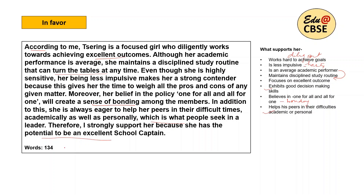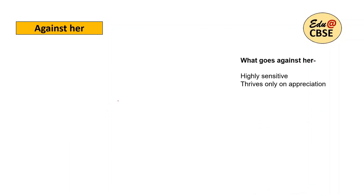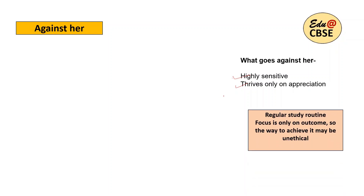The word count is 134 — that's fine. Now let's move on to the next one: the paragraph against her candidature. There were two points against her — highly sensitive and thrives only on appreciation — but I'm going to use a few other points too. I'm taking points from the strengths column and converting them into weaknesses, because sometimes what looks like a strength may not actually be a strength. I'll use: a regular study routine — we'll see how to show it as a weakness — and 'focuses only on the outcome', meaning maybe she's using unethical ways to reach there.